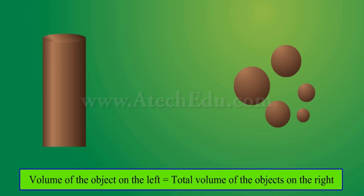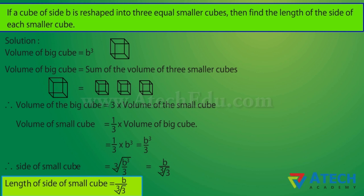Question: If a cube of side B is reshaped into three equal smaller cubes, then find the length of the side of each smaller cube. Answer: We have to find the length of the side of each smaller cube.